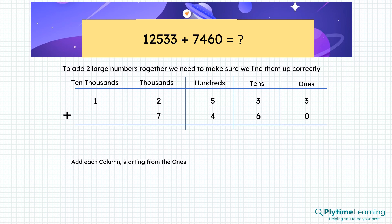Now we need to add each column starting from the ones. So three plus zero is three. Into the tens column, three plus six is nine. Then the hundreds column, five plus four is nine.